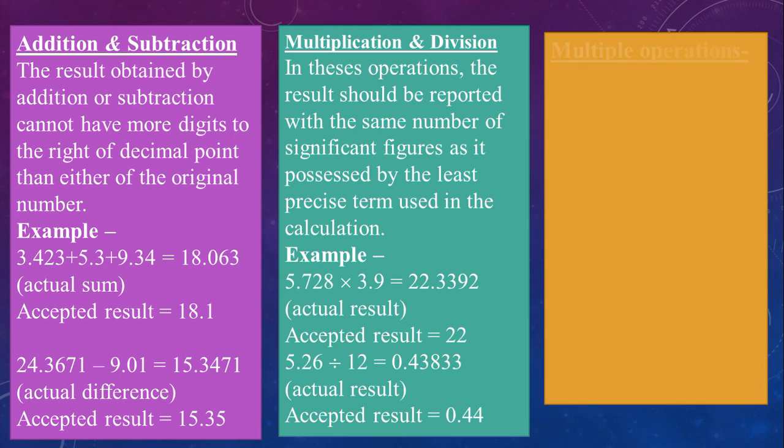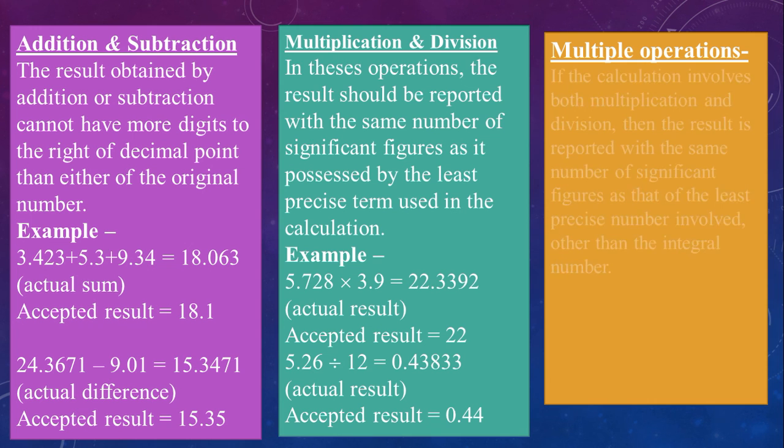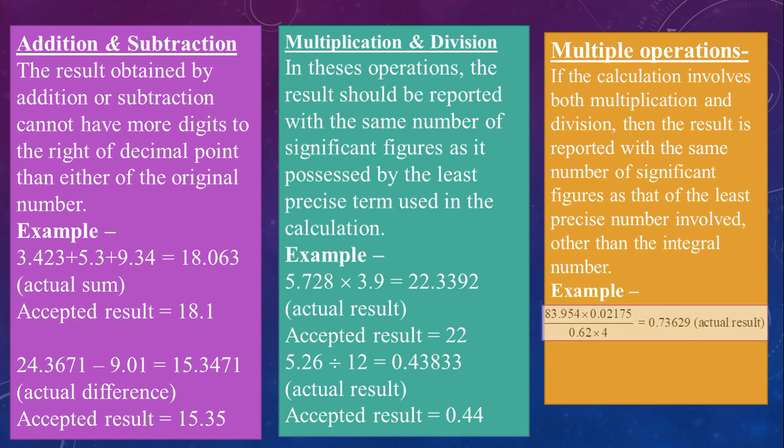We have seen one rule of addition subtraction, another rule of multiplication division. Now comes the combination of multiple operations. Here, let us see instead of rule an example itself. We have an actual result of multiplications and division like this and final answer reported is 0.74. So, significant figure will be taken as the least precise number involved. This is completing our unit number 1 of the first topic.